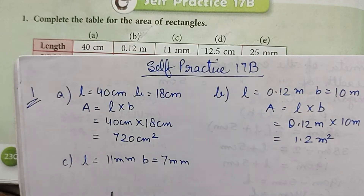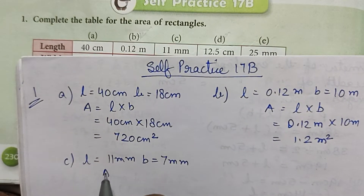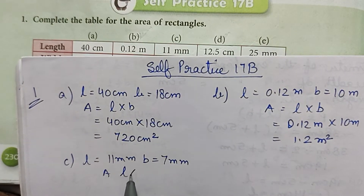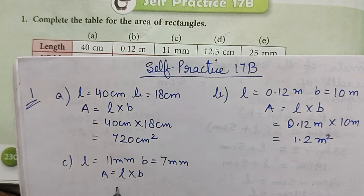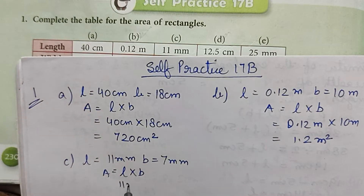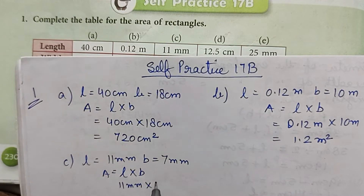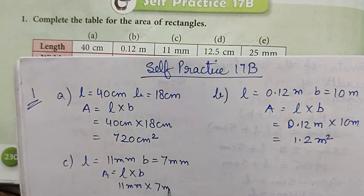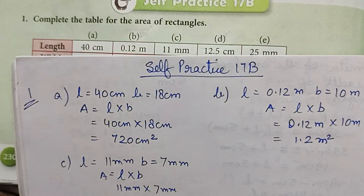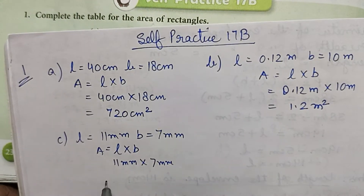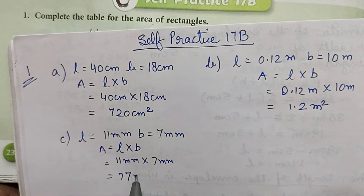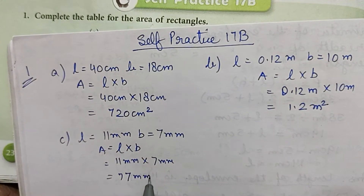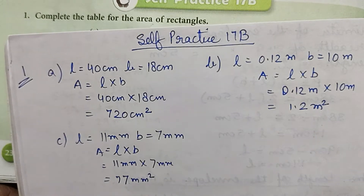Area is L × B, so 11 millimeter × 7 millimeter is equal to 77 millimeter square.